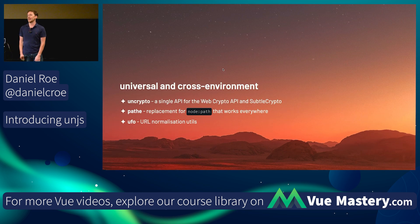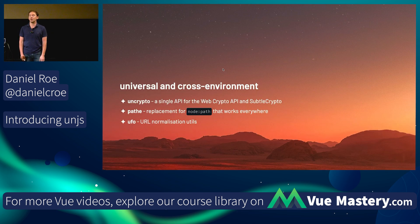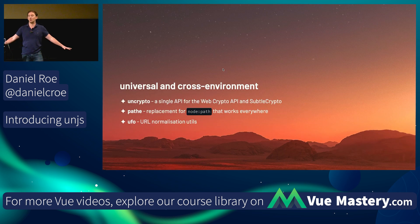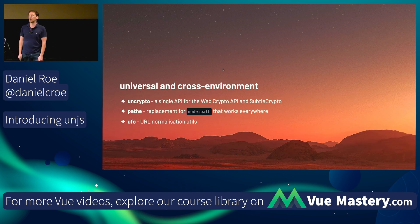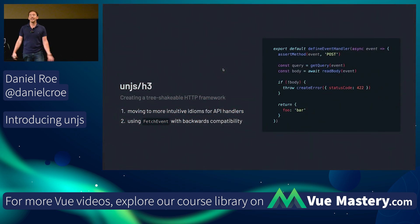You can also use pathe in the browser. UFO is a URL normalization utility. Did you know the URL constructor works in profoundly different ways across different browsers? UFO handles that — it lets you combine URLs, add path segments, parse queries, and all kinds of things. You might find it useful in your projects.